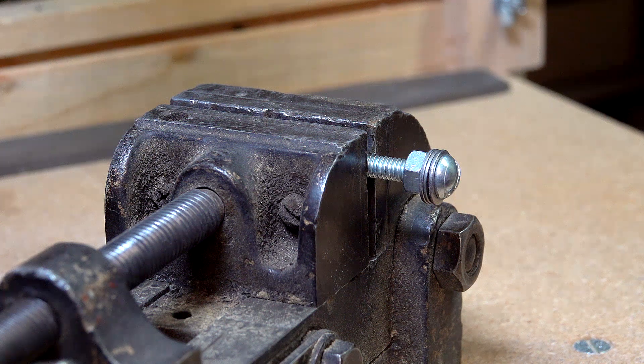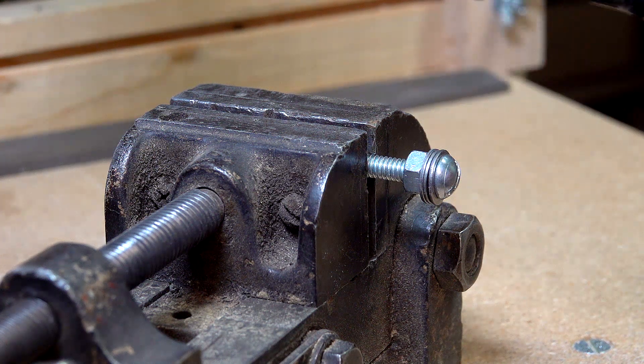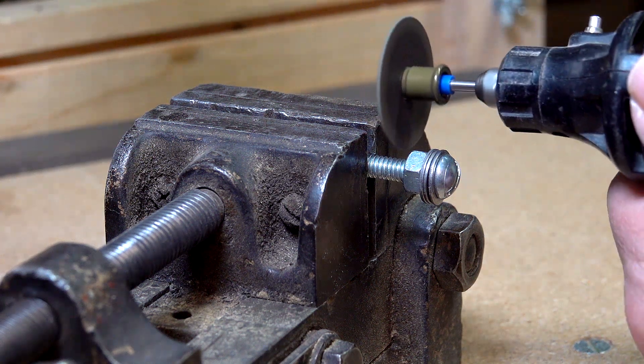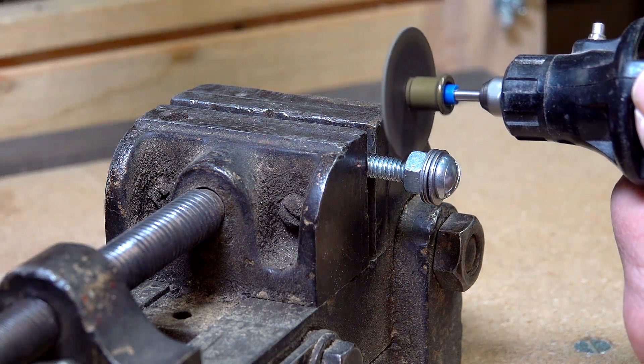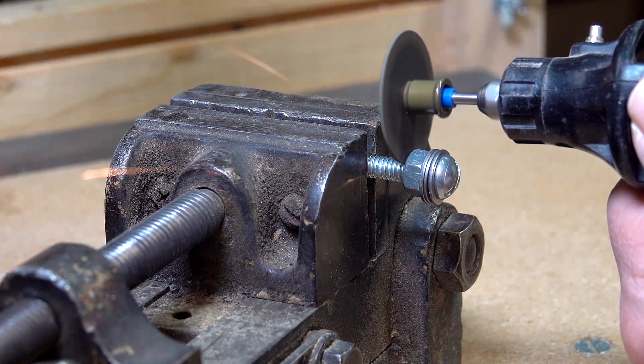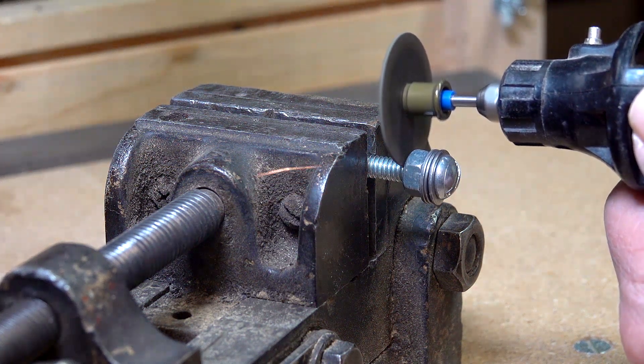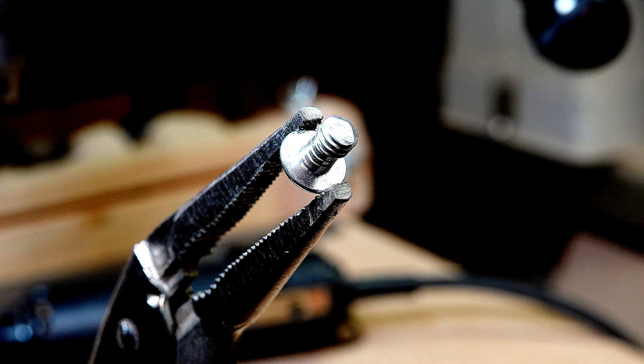I then put washers and a nut on the screw to a length of about 3/8 of an inch, or 10 millimeters, and cut the screw to that length. I use a Dremel tool, but a hacksaw will work too. File and sand the end smooth, slightly rounding the tip to remove any burrs.